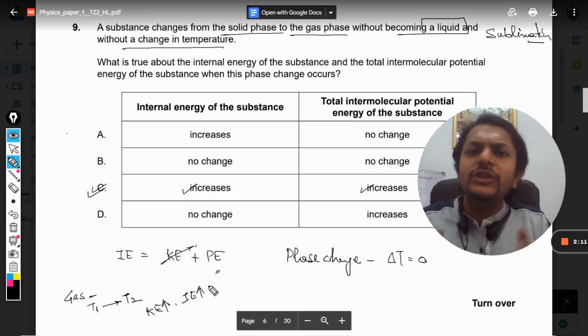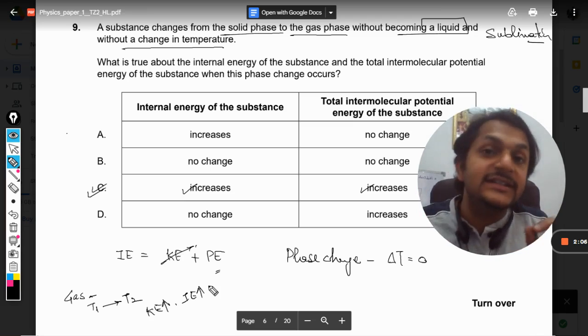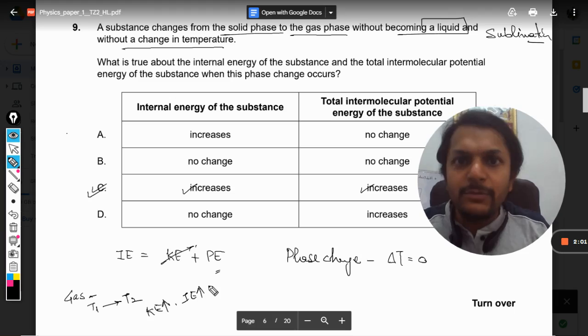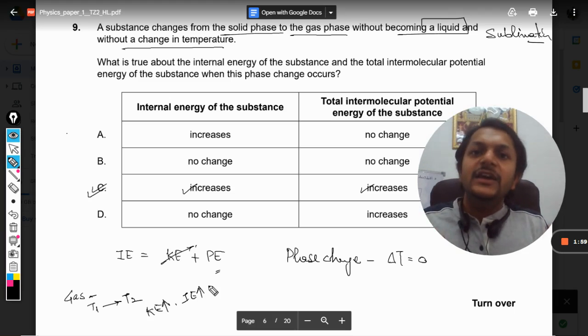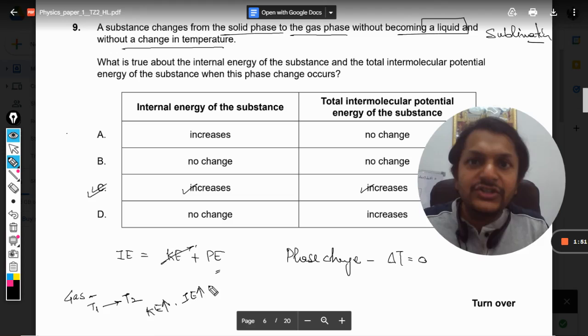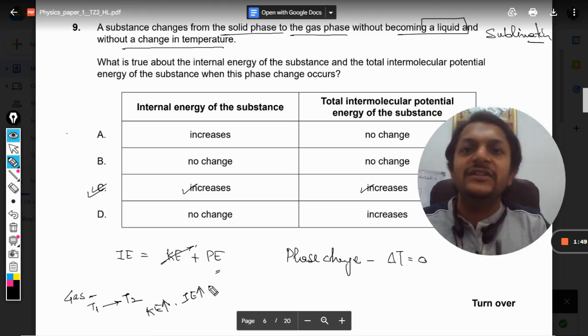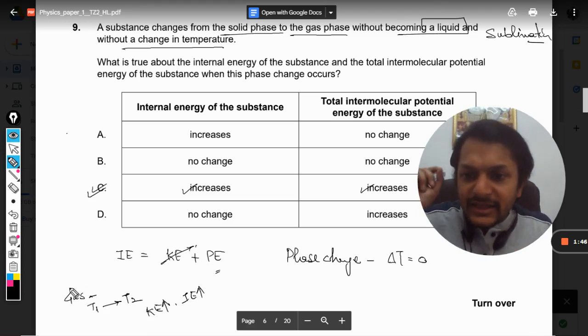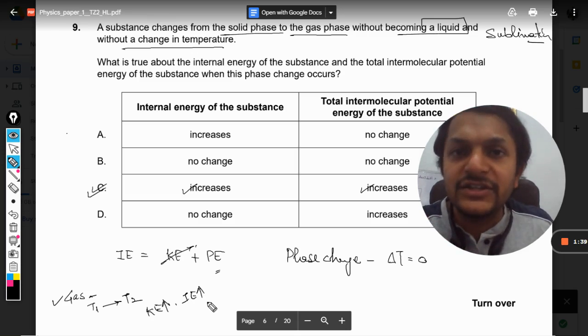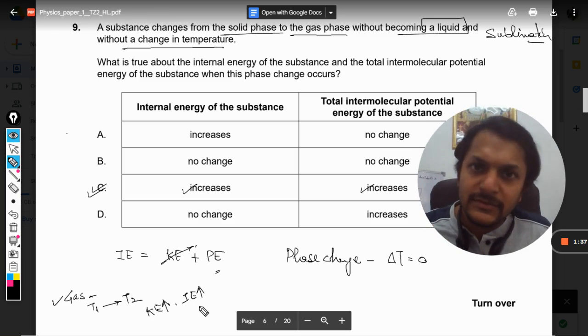But what about the potential energy in this second case? We do not consider the potential energy. Why? Because in the ideal state, we say that the molecules are not interacting with each other - they do not have attraction forces or repulsive forces. So potential energy will not be considered in the case of ideal gases. Kinetic energy will increase if the temperature increases, as well as the internal energy.